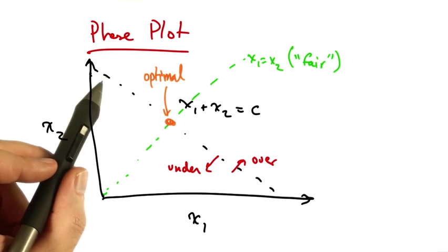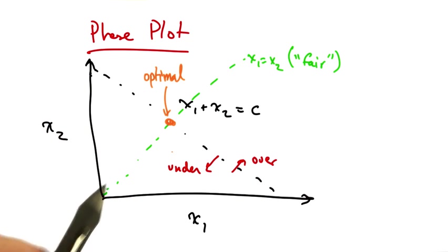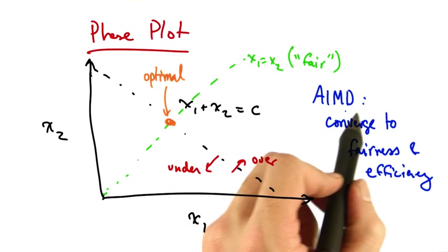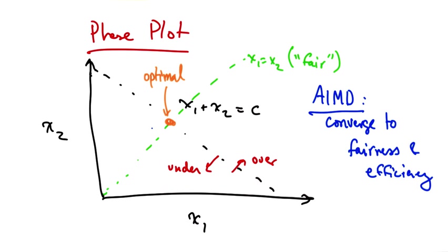So being on this diagonal line represents efficiency, and being on the green diagonal line represents fairness. We can use the phase plot to understand why senders who use additive increase, multiplicative decrease converge to fairness. The senders also converge to the efficient operating point.